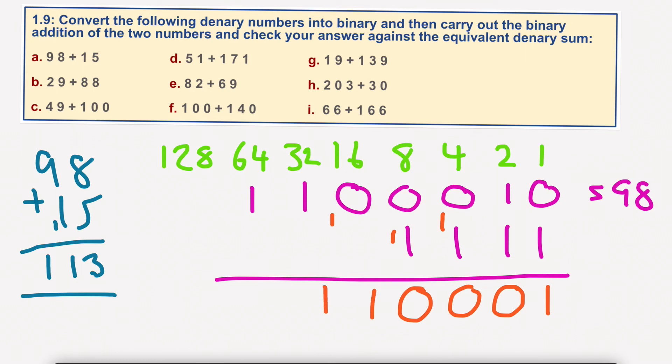1, 1, 1, 1. Now, does that equal 113? Let's have a look. Let's have a look. 64 plus 32 plus 16 plus 1, 113.